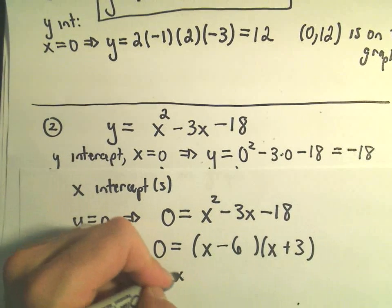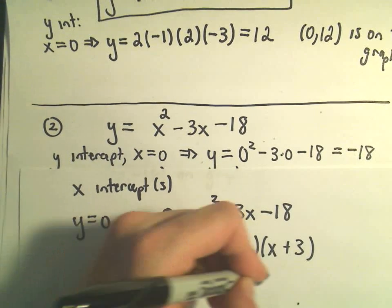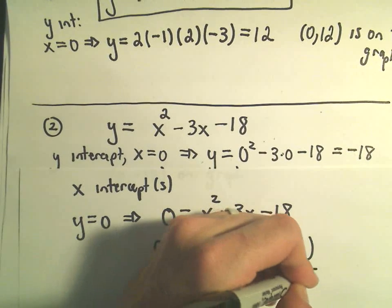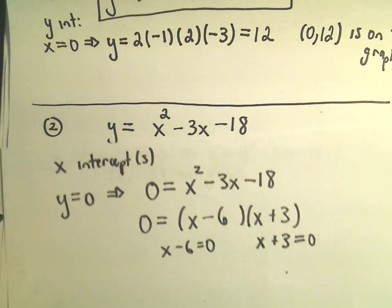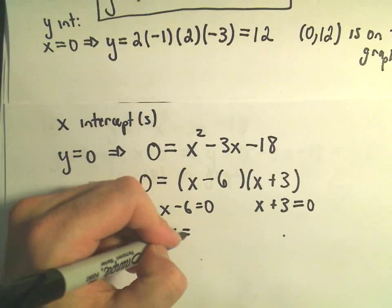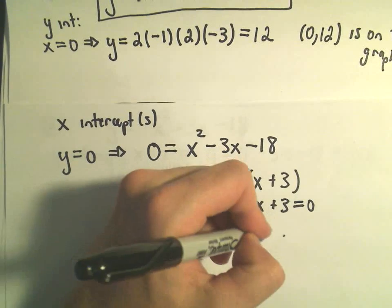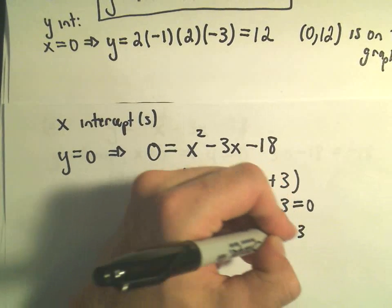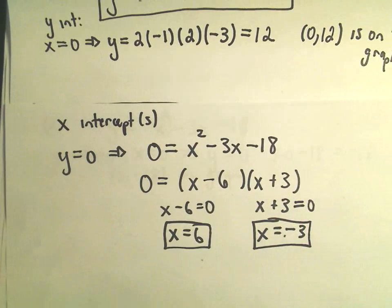So now we've got it factored, so we just set x minus 6 equal to zero, x plus 3 equal to zero. If we solve the first equation we just add 6, x equals 6 is one of them, subtract 3, and we'll get x equals negative 3 as our other solution.